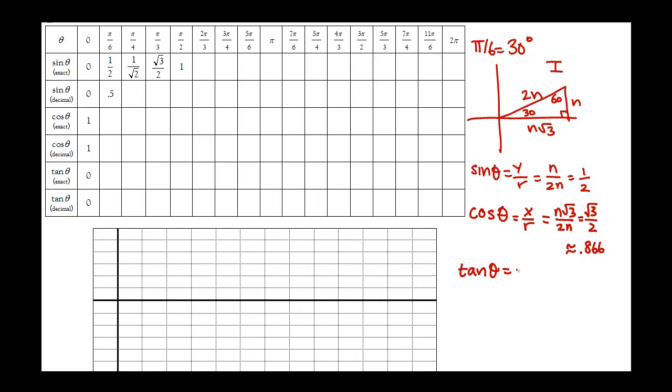The next ratio is the tangent, which is defined as y over x, the y-coordinate over the x-coordinate. So n over n root 3, which reduces to 1 over square root of 3, which is about 0.577.